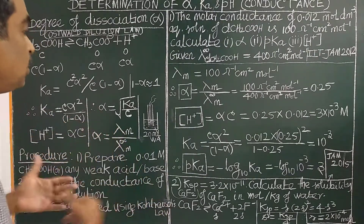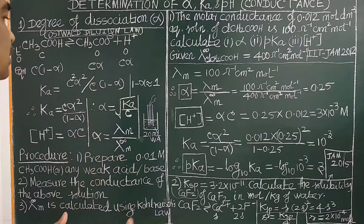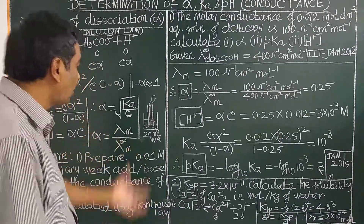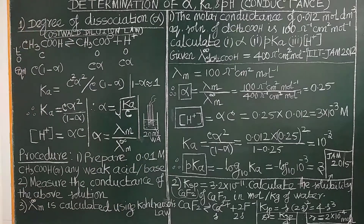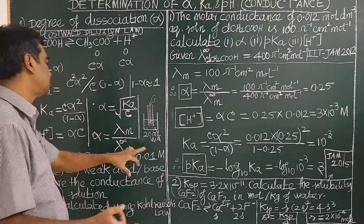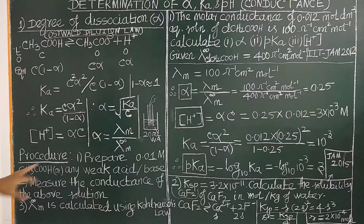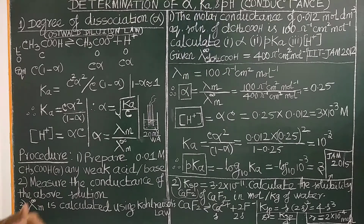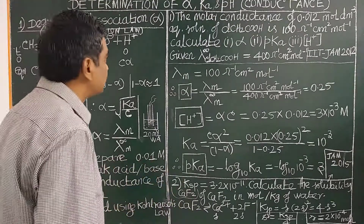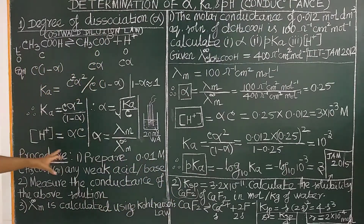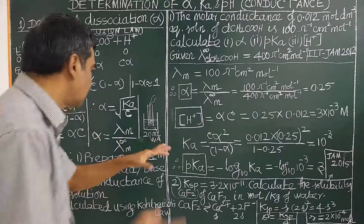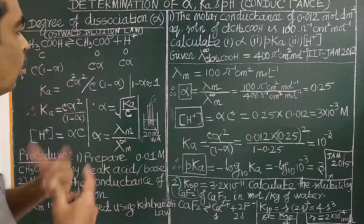Using Kohlrausch's law, the limiting molar conductance at infinite dilution can be calculated. Let us see the method — how the degree of dissociation is measured, how the pH is measured. First, prepare a solution of 0.01 molar concentration.